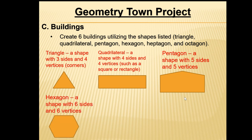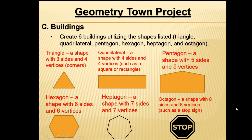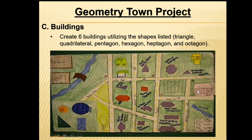A hexagon is a shape with six sides and six vertices. A heptagon is a shape with seven sides and seven vertices. And lastly, an octagon is a shape with eight sides and eight vertices, such as a stop sign. Let's get to some examples that you might see on a particular project.